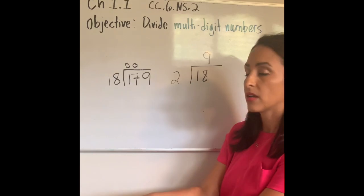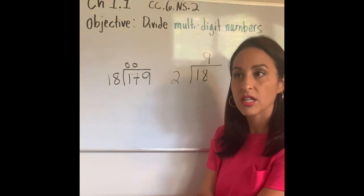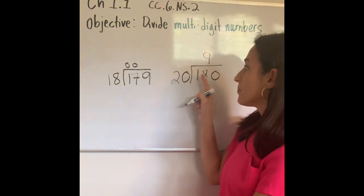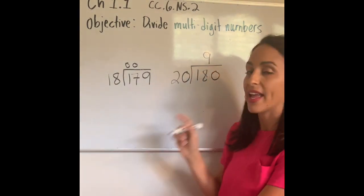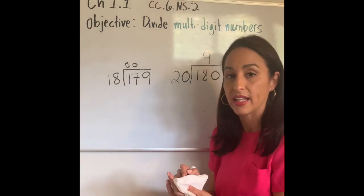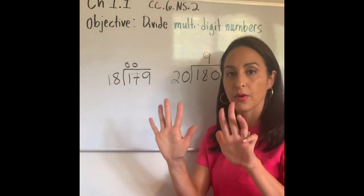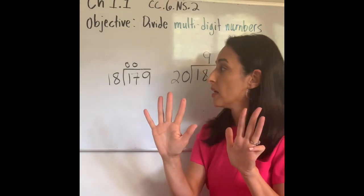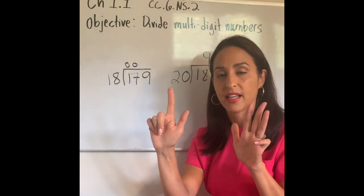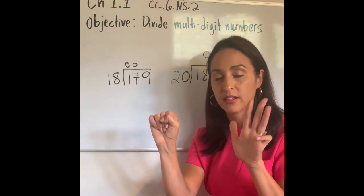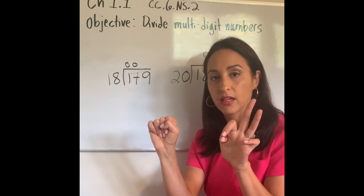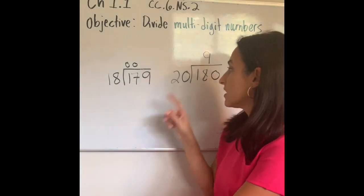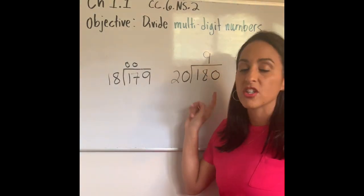2 times 9 is 18. Well, if I add those zeros back, that means that 20 times 9 gives me 180. Trust me, it's true. Let's try it. Let's count by 20s and we're going to do it 9 times. Let's see if we get to 180. So here we go: 20, 40, 60, 80, 100, 120, 140, 160, 180. So 9 times 20 times 9 gets me to 180.